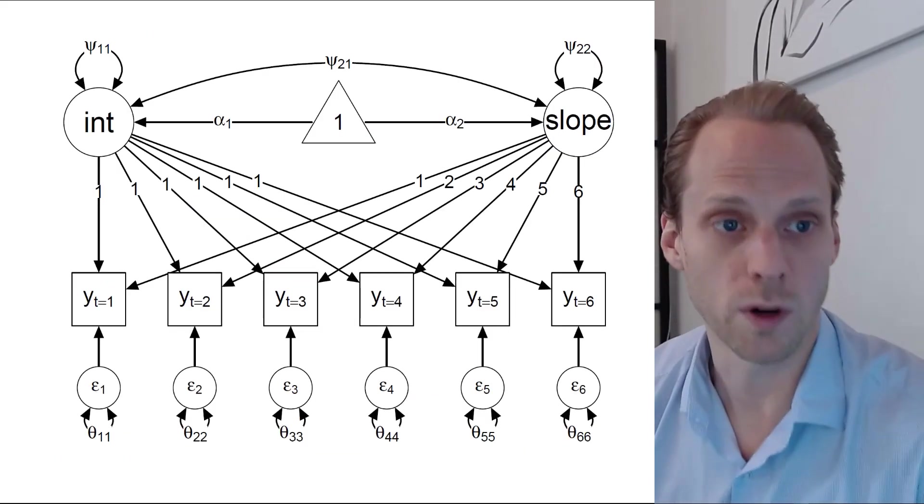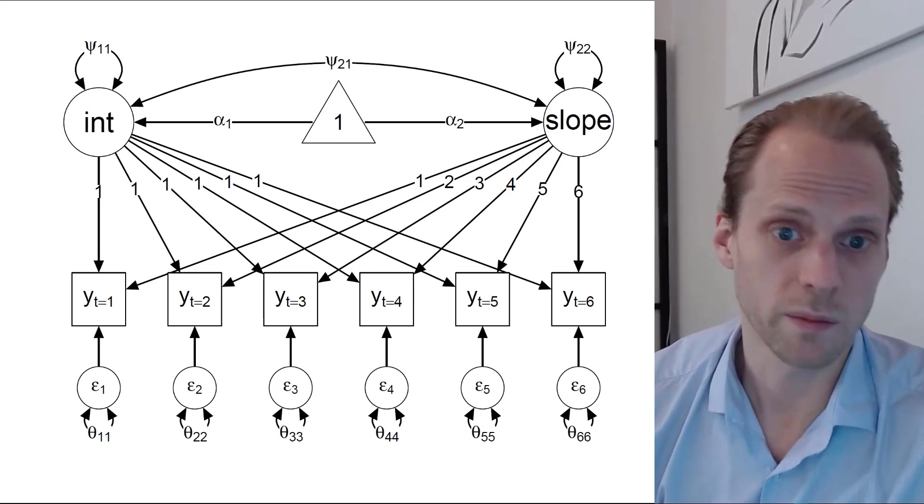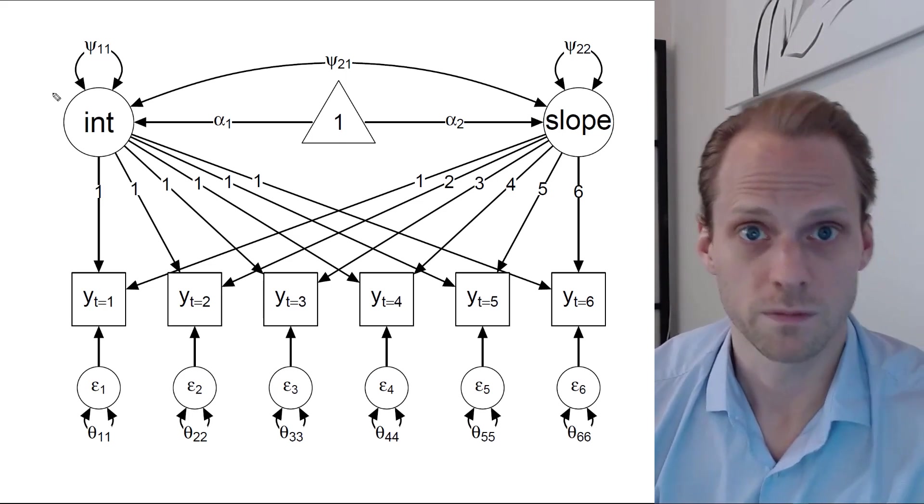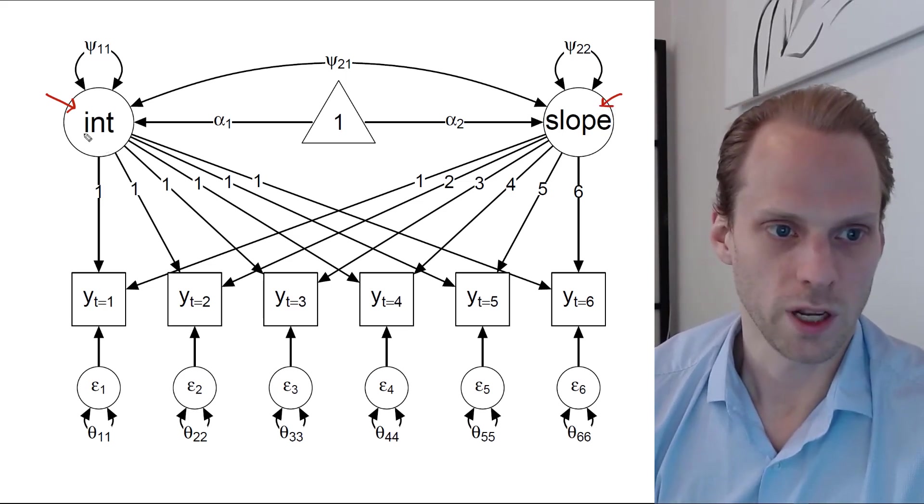This is what we then call a latent growth curve model. And it's a bit tricky, but actually it makes a lot of sense. So first of all, we have two latent variables: an intercept and a slope.